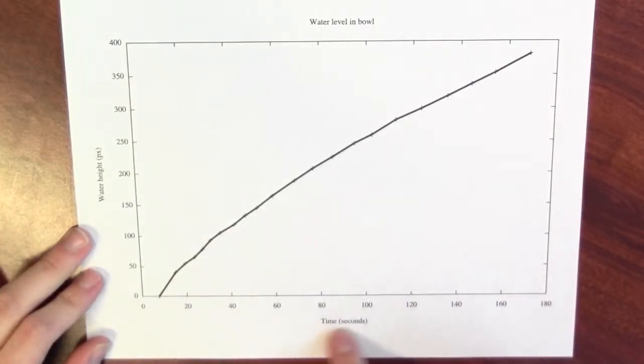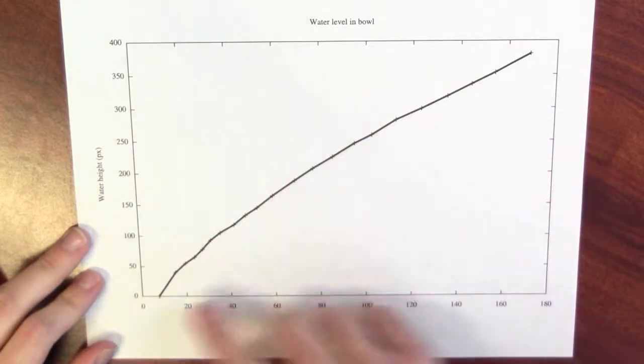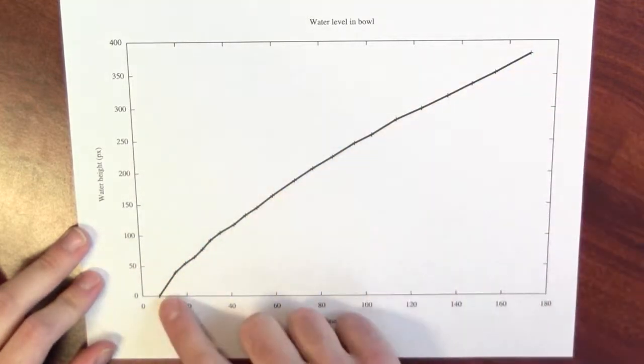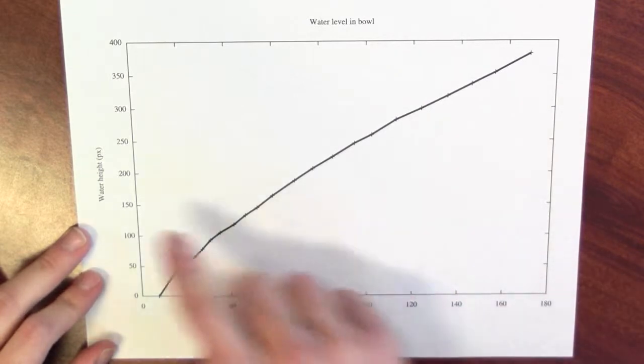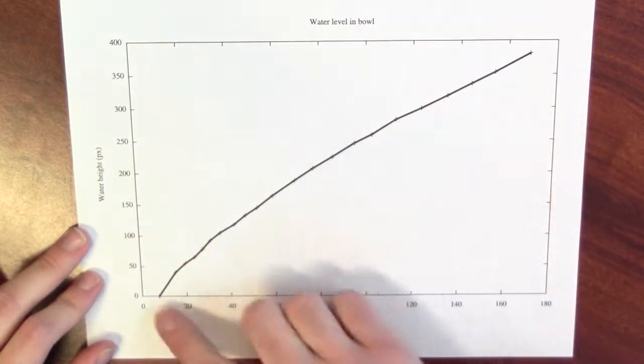On the x-axis, I've plotted time in seconds. And on the y-axis, I've plotted the water's height in pixels. And here's the curve that I get. Each of these little crosses is one of the measurements that I made at some given time. I measured the height of the water, and I get this curve.